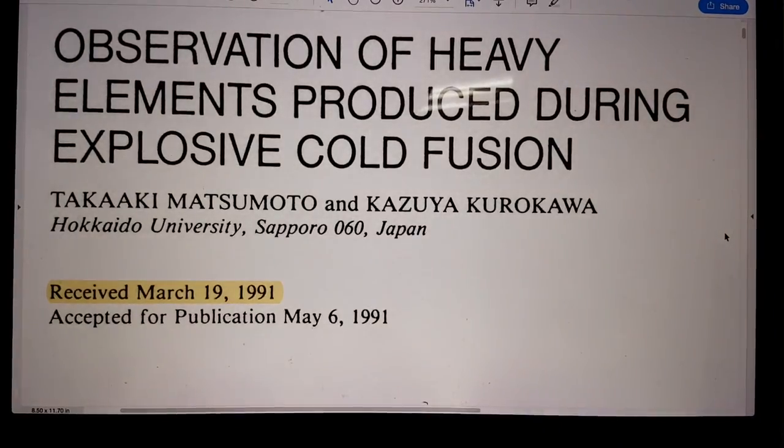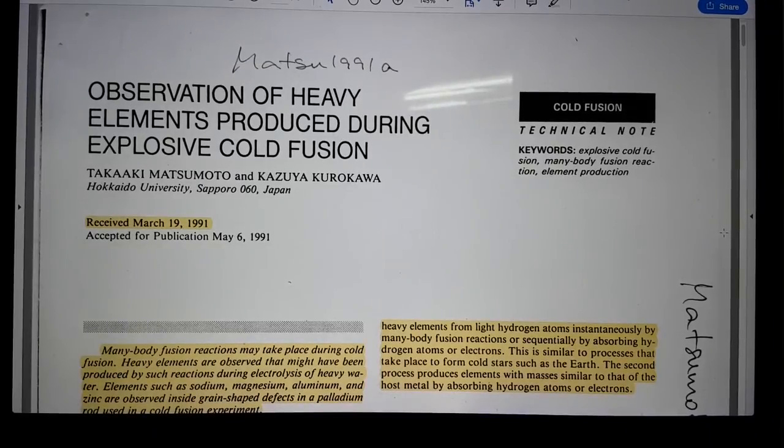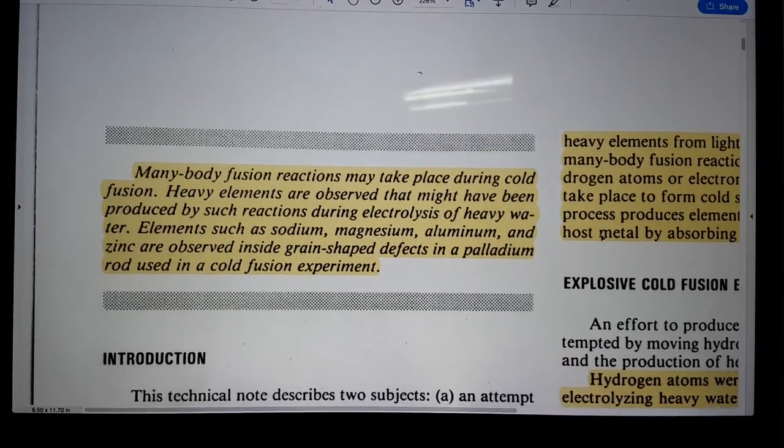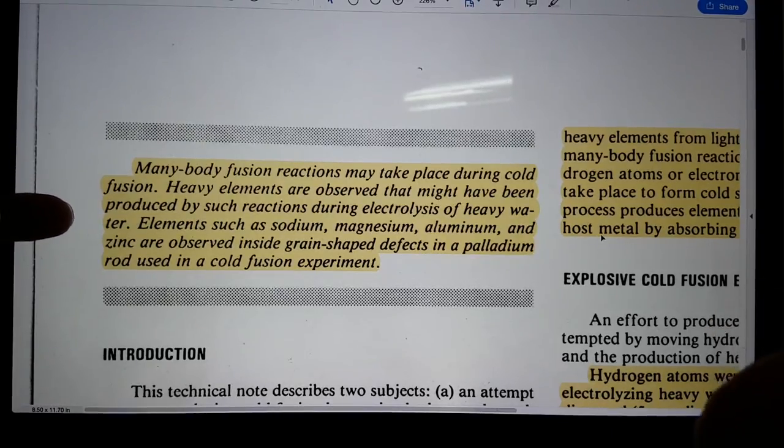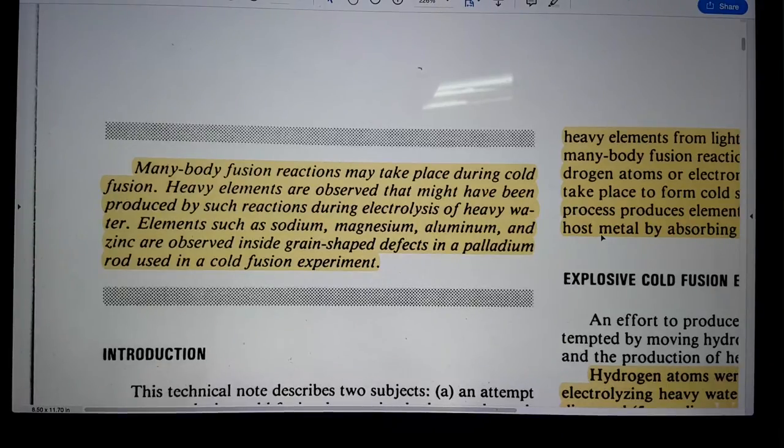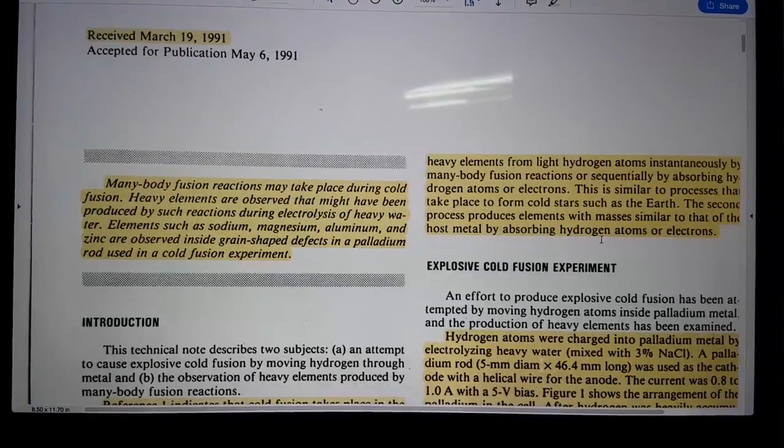So the paper is called Observation of Heavy Elements Produced During Explosive Cold Fusion. That sounds very dangerous. Anyway, dig into this. So I think right from the first paragraph I've highlighted here, he's showing the beginnings of a good understanding of what's going on in the process. Many body fusion reactions may take place during cold fusion. Heavy elements are observed that might have been produced by such reactions during electrolysis of heavy water. Elements such as sodium, magnesium, aluminium, and zinc are observed inside grain-shaped defects in palladium rod used in a cold fusion experiment. So obviously, he's put his provisos in there, and that's understandable.